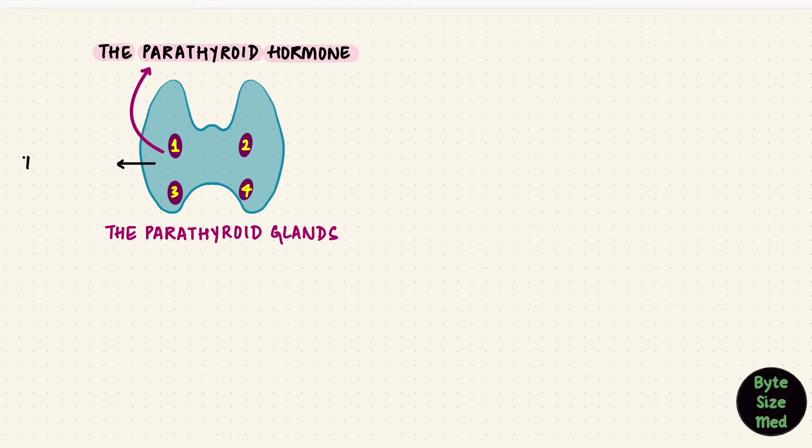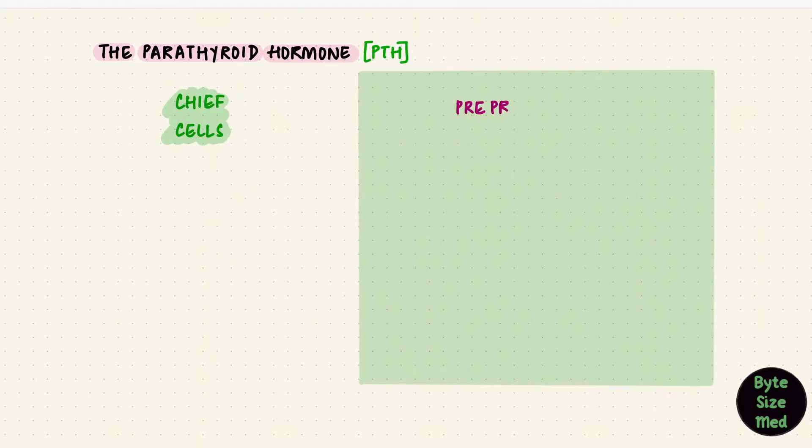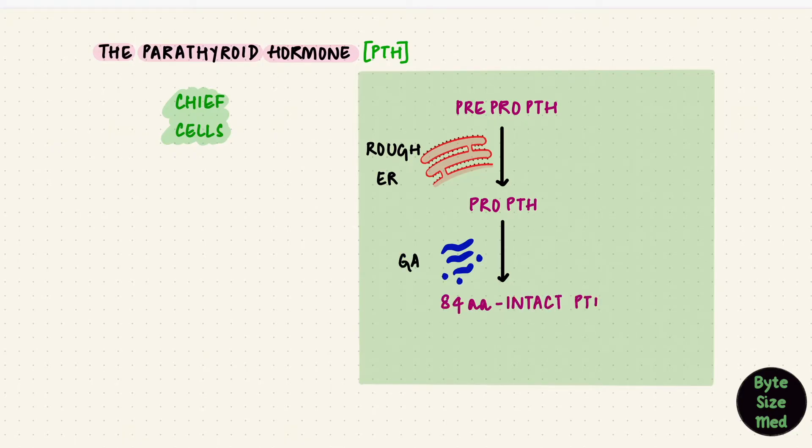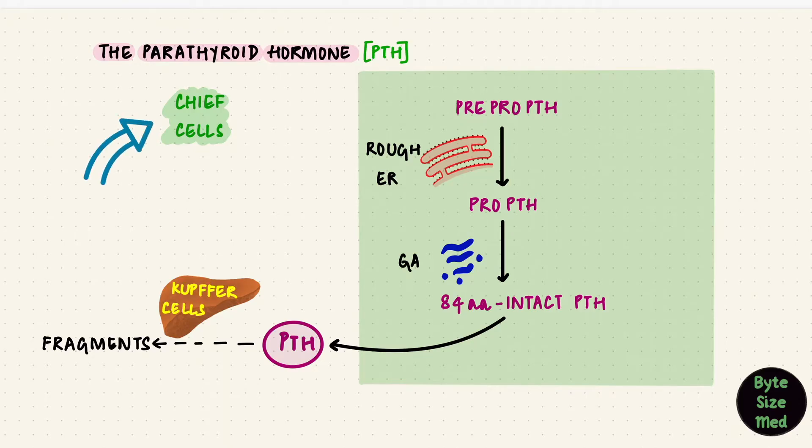The parathyroid hormone is synthesized and secreted by the parathyroid glands. There are usually four glands situated on the posterior surface of the thyroid gland. These glands have cells called chief cells which synthesize PTH, the abbreviation usually used for this hormone. It first gets synthesized as a longer peptide called pre-pro-PTH, which then gets shortened in the rough endoplasmic reticulum to form pro-PTH, and then the Golgi apparatus removes a few more amino acids, secreting an 84-amino-acid-intact PTH which is biologically active. This PTH gets broken down into fragments mainly in the Kupffer cells of the liver.